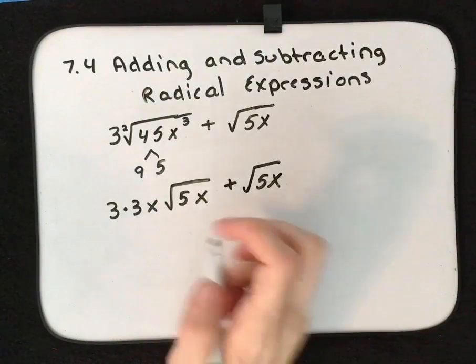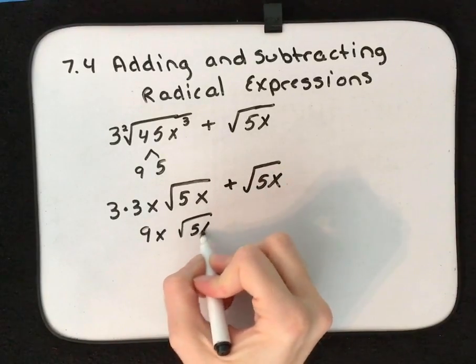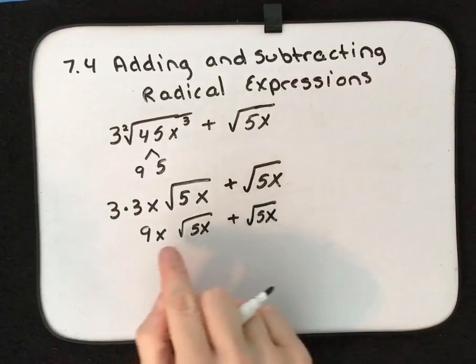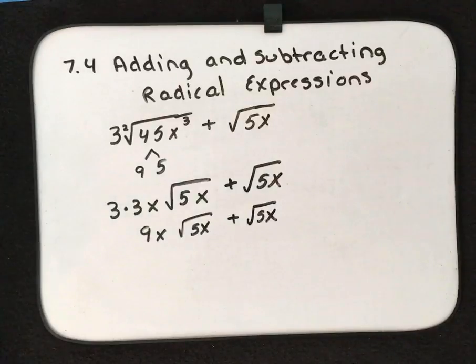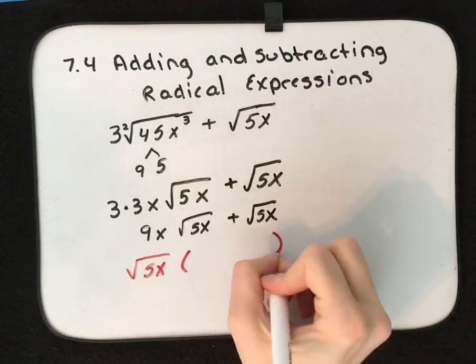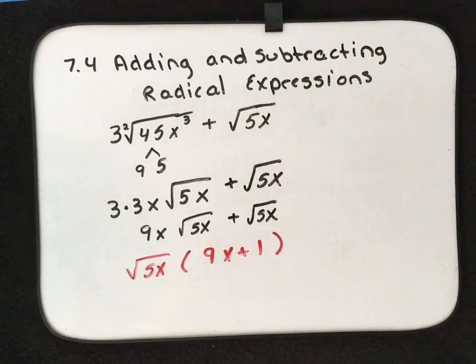Well, I can't add directly. Here I have 9x and I have √(5x) and I have √(5x). This is technically 1, but I can't just add it directly. However, I can factor out what's common, which in this case is √(5x), and write what's left over, which in this case is 3x + 1. Now it's simplified.